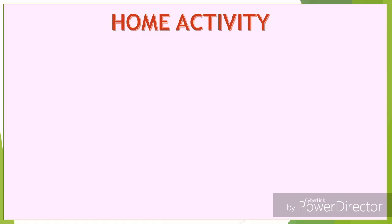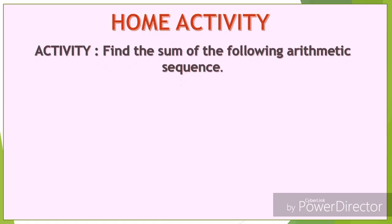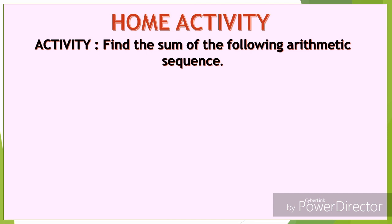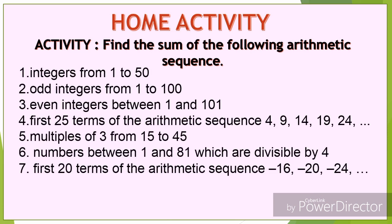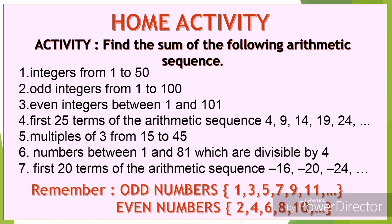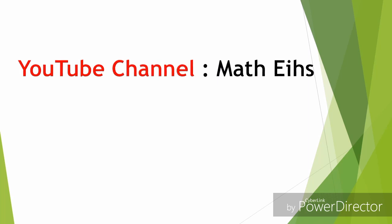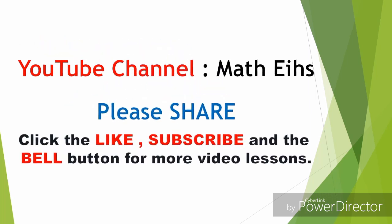For your home activity, you're going to find the sum of the following arithmetic sequences. Remember that odd numbers are 1, 3, 5 and even numbers are 2, 4, 6 and so on. This is my YouTube channel, Matish. Please don't forget to share. Thank you.